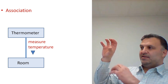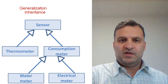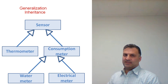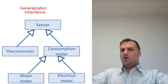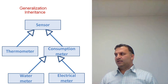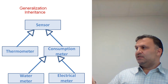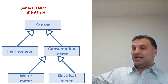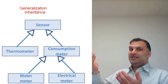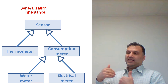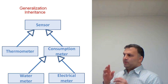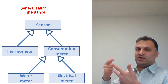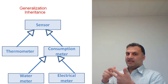Inheritance is another very important relationship used to classify classes. For example, a consumption meter is a sensor. Since we specify that, it inherits all the attributes of the sensor — so we know that a consumption meter contains at least two attributes: range and accuracy.